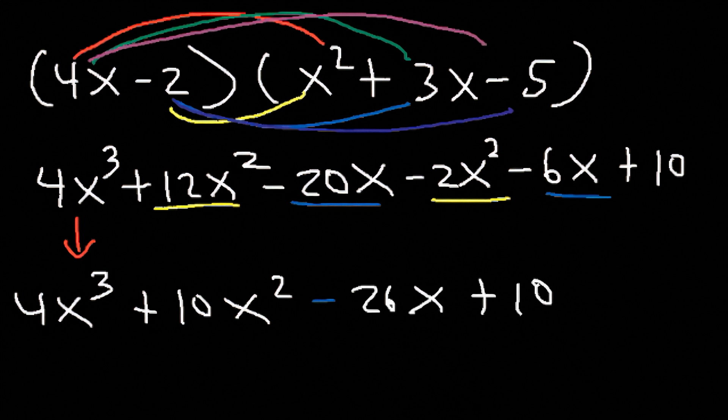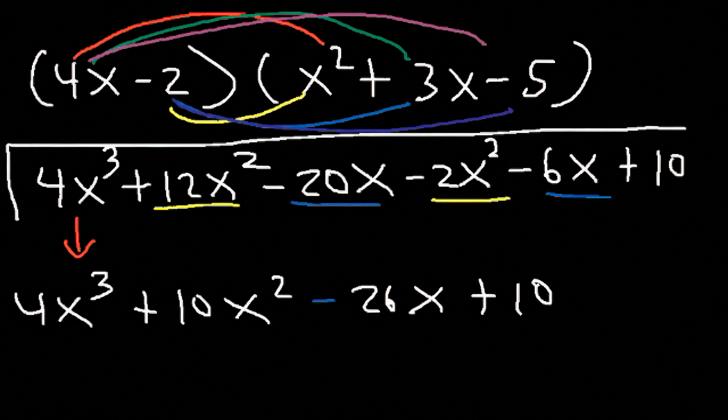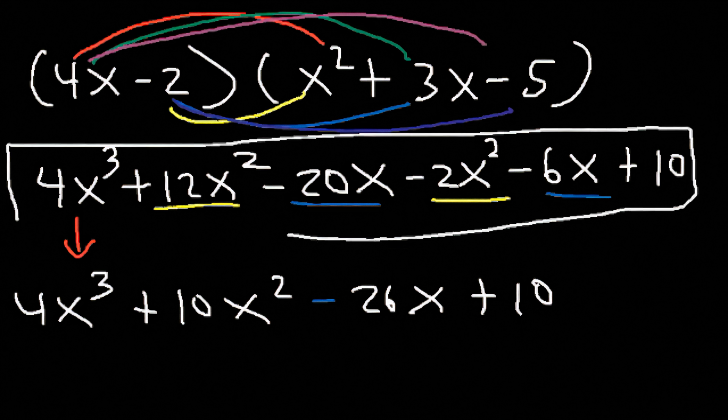As you can see, before we combined like terms we had a total of six terms initially. Anytime you multiply a binomial by a trinomial, you will initially get six terms.